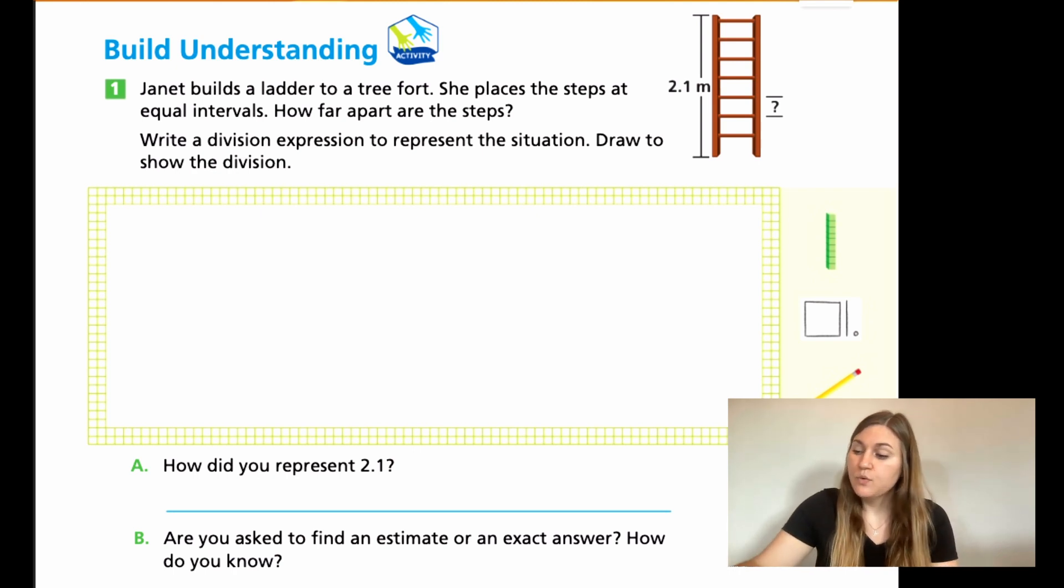So we have 2.1 meters for the total ladder length. And what we're missing is how many steps there are. So we do need to count them. We have 1, 2, 3, 4, 5, 6, 7 of those steps. So our problem here, and I'm just going to help you a little bit, is the division expression to represent the situation is going to be 2.1 divided by 7. And that's all I'm going to give you for this one beforehand.